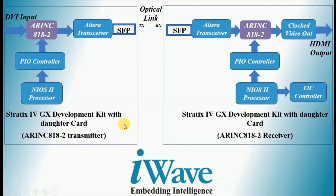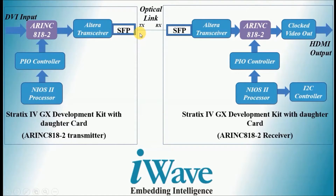The ARINC 818 IP has been validated on Altera Stratix 4 GX Development Board using HSMC DVI input and output daughter card and HSMC transceiver daughter card. Board-to-board test is done over optical link. In one board, the ARINC transmitter is used and DVI input data is transmitted over transceiver TX line. In the other board, the transmitted ARINC frame is received through optical RX link, deframed, and sent over HDMI output interface. NIOS processor is used to enable the ARINC transmitter and receiver through PIO controller and configure the HDMI video chip.